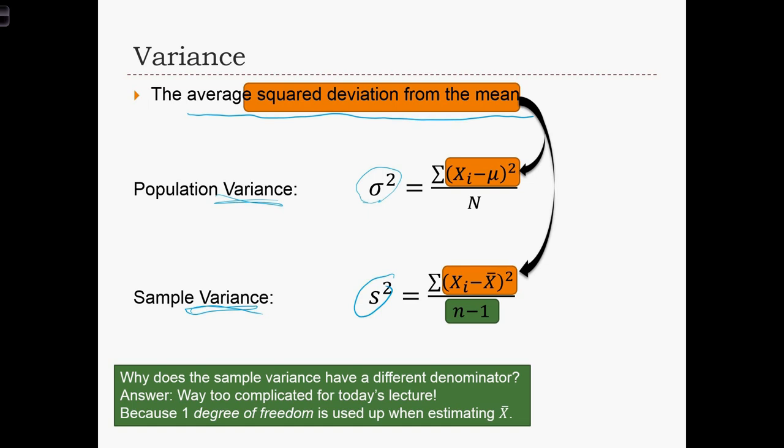All we're doing is taking the average square deviation from the mean. In the population case, we're taking the deviation from mu, the population mean. And in the sample case, we're taking the deviations from x bar, the sample mean.